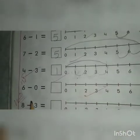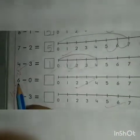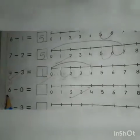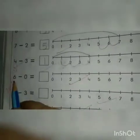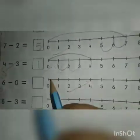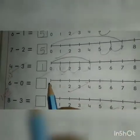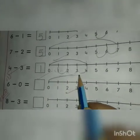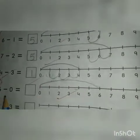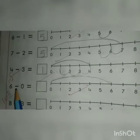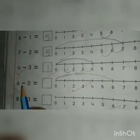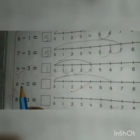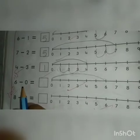Now we will write number 1 here. 4 minus 3 is equal to 1. Let's go to next line. And which number is this? This is number 6. Now we will go to 6 starting from 0. And which sign is this? It's the sign of minus.